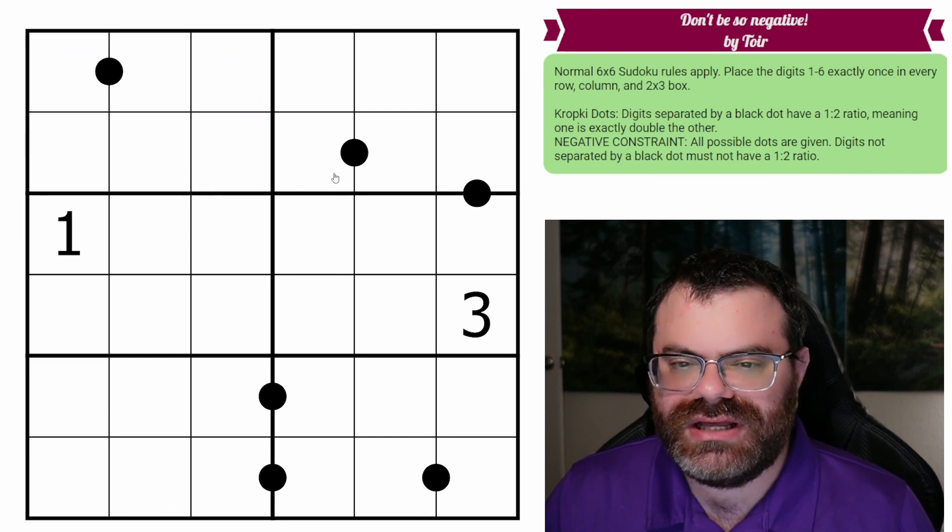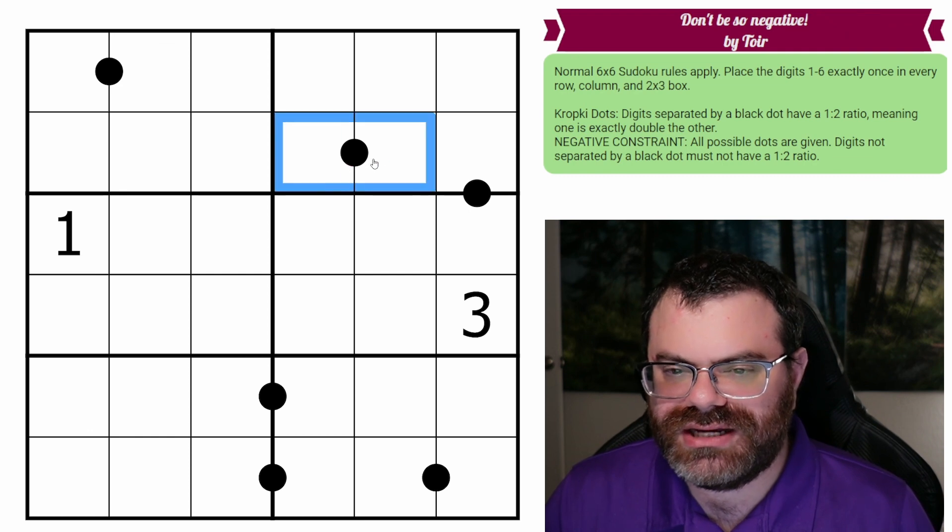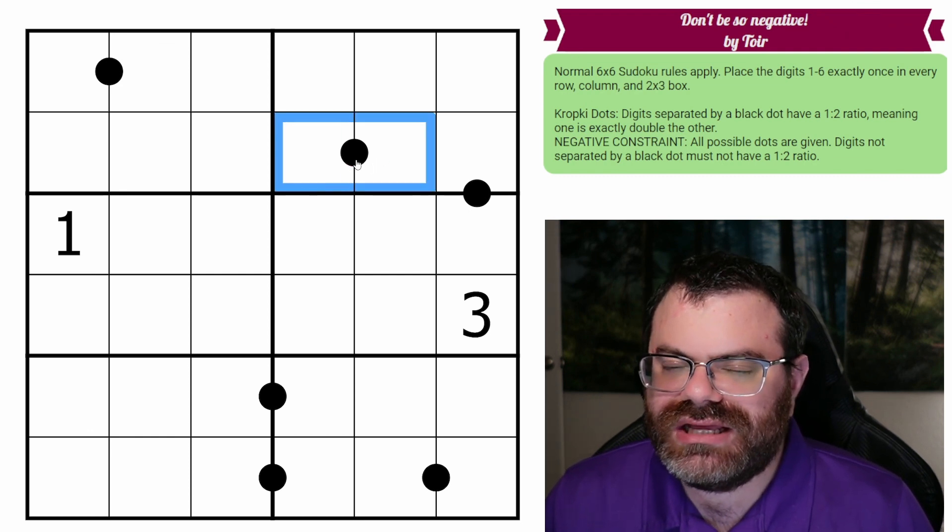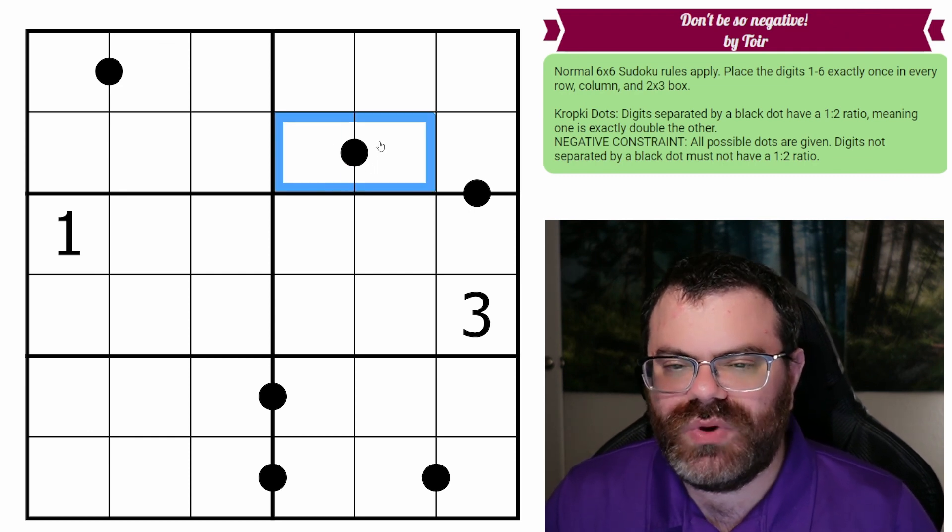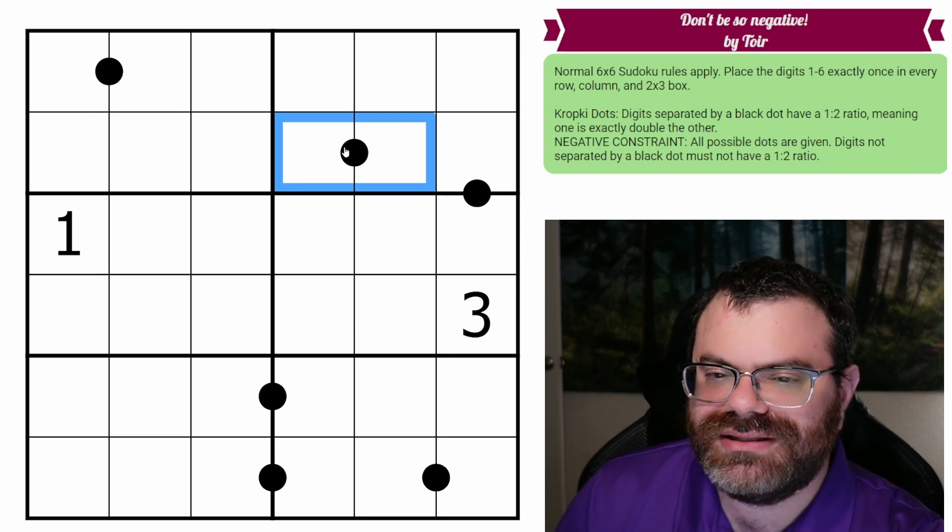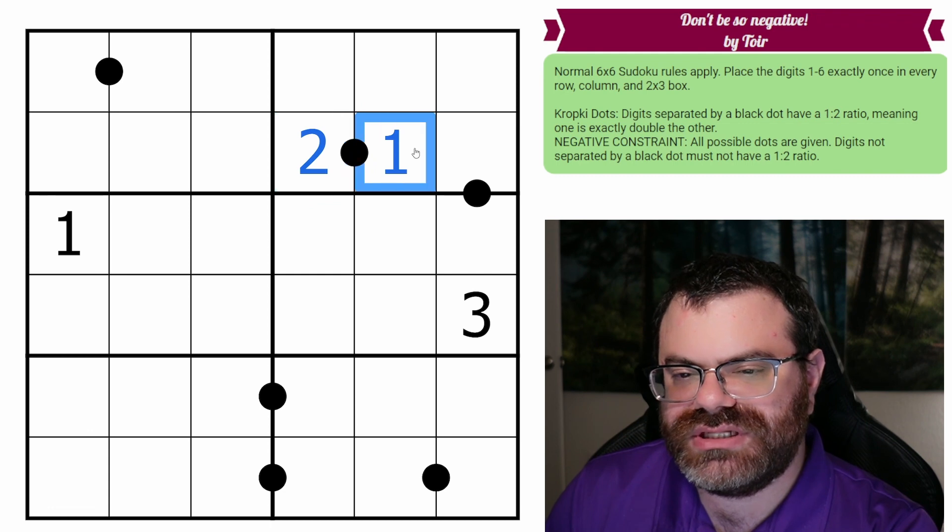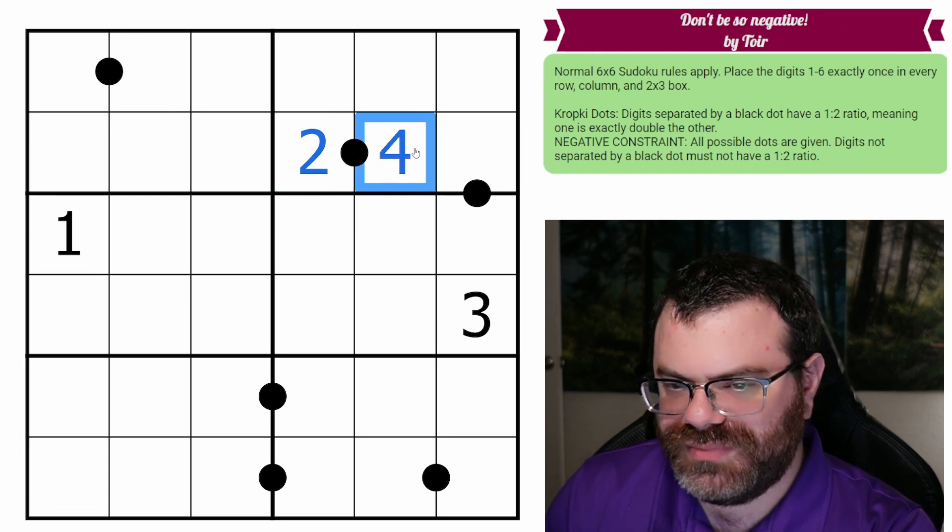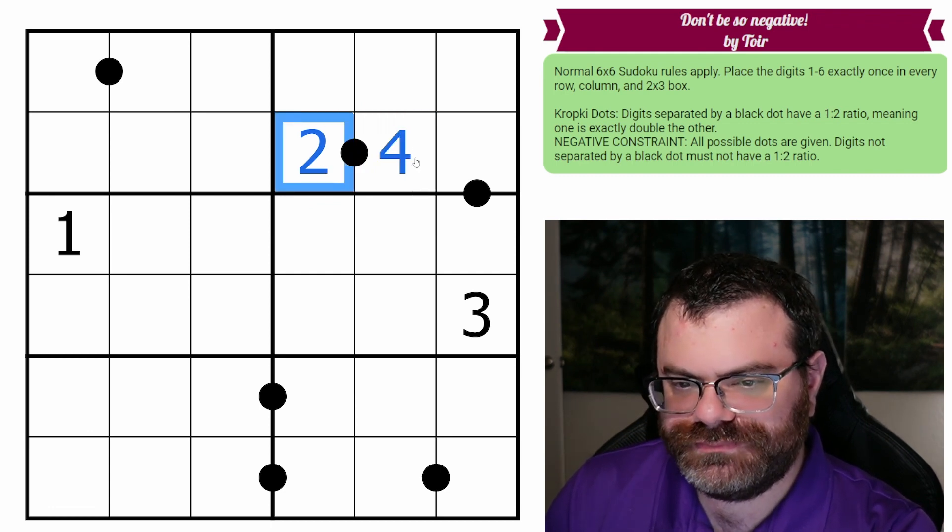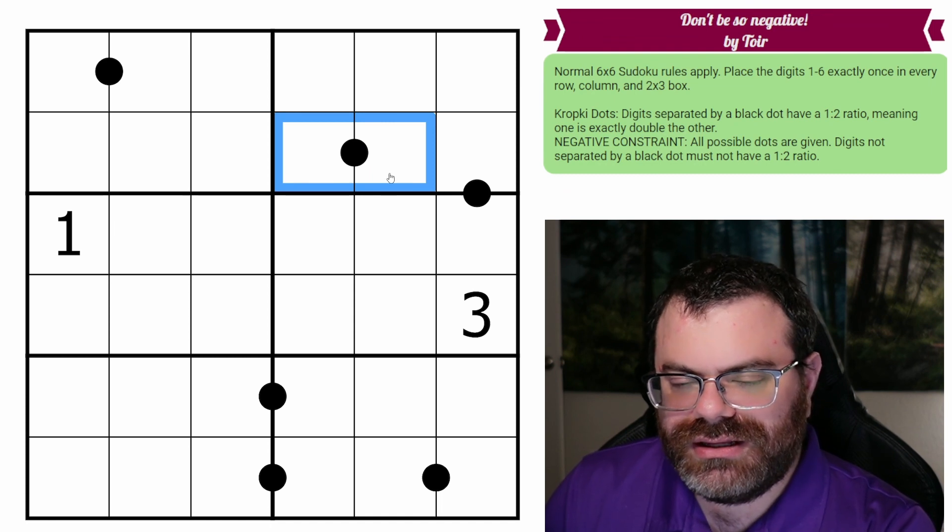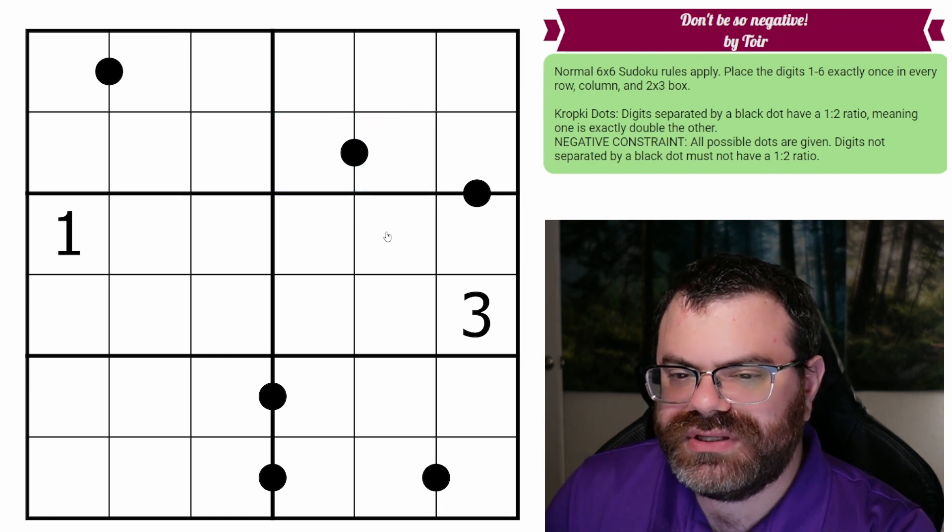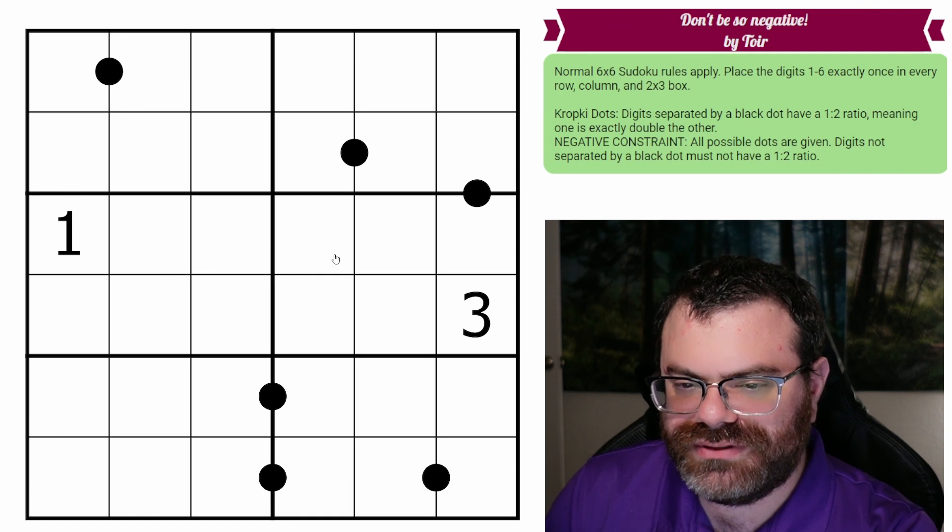We also have kropki dots, these black dots only. Digits separated by a black dot have a one to two ratio, meaning one is exactly double the other. So if I put a two here, this could be one because two is double one, or it could be four because four is double two. Additionally, we have a negative constraint, all the dots are given, all possible dots are given.